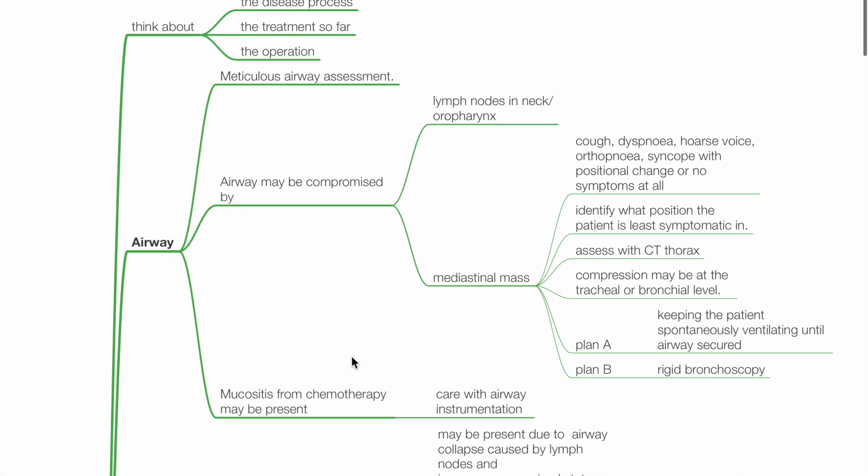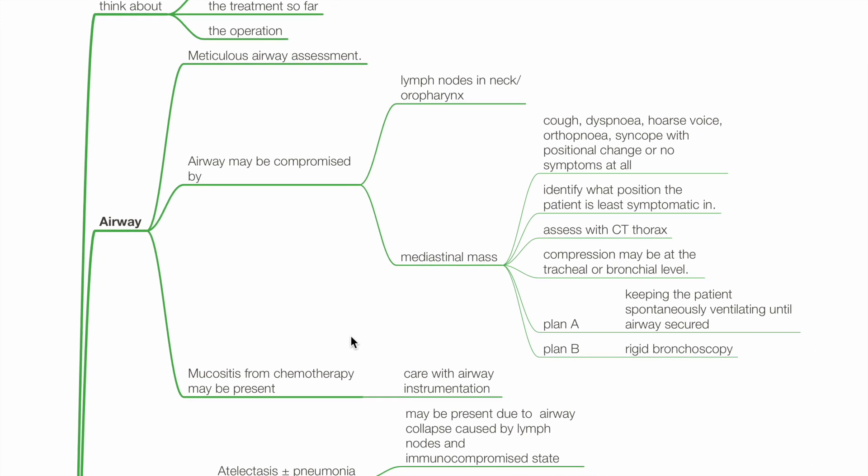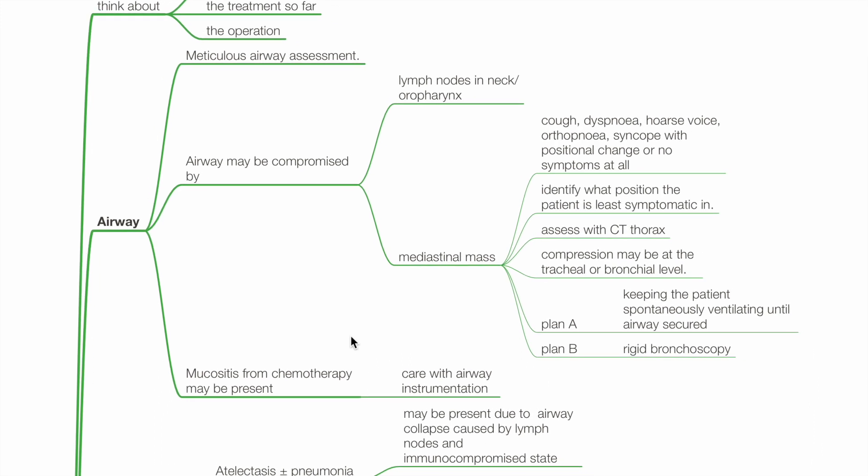Airway: Meticulous airway assessment is required. The airway may be compromised by lymph nodes in the neck or oropharynx and mediastinal mass compression. If there is airway compression in the mediastinum, the patient may complain of cough, dyspnea, hoarse voice, orthopnea, syncope with positional change, or no symptoms at all. Identify the position the patient is least symptomatic in. Assess with CT thorax — compression may be at the tracheal or bronchial level. Plan A is keeping the patient spontaneously ventilating until the airway is secured; Plan B is rigid bronchoscopy. There may be mucositis from chemotherapy, so care with airway instrumentation is required.